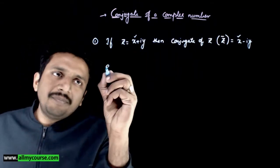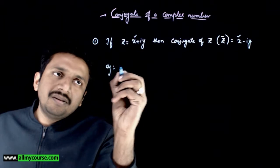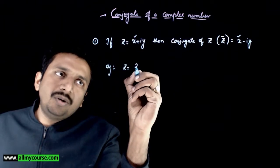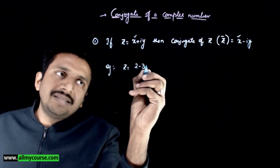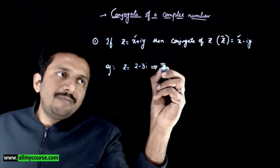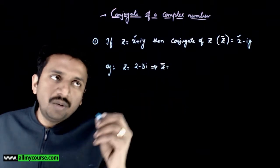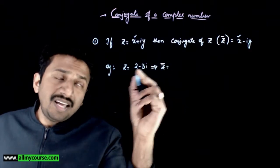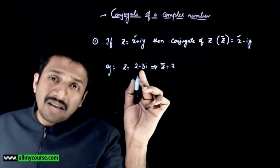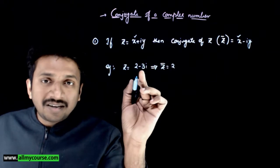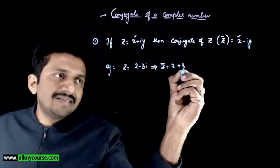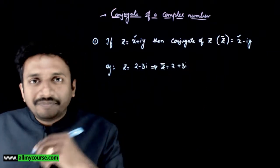For example, if z is equal to 2 minus 3i, then z bar will be equal to 2 plus 3i — the real part remains the same and the sign of the imaginary part gets flipped.